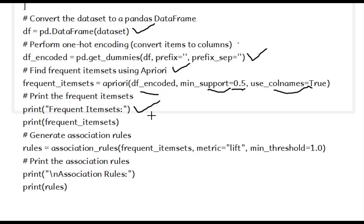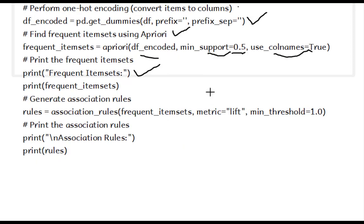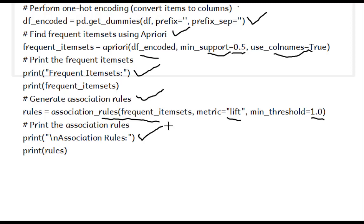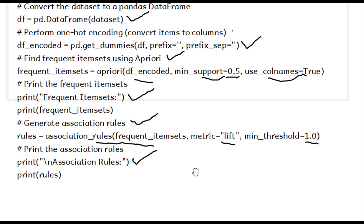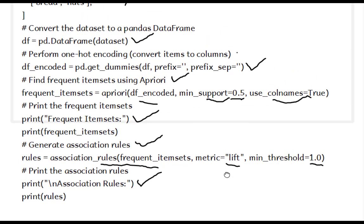Find frequent item sets using Apriori. The Apriori function from the MLExtend library takes the encoded DataFrame, a minimum support threshold (min_support), and specifies use_colnames=True. The min_support parameter is set to 0.5, meaning item sets appearing in at least 50% of transactions will be considered frequent. Then print the frequent item sets along with their support values. The association_rules function generates association rules from the frequent item sets, specifying the metric as lift and setting a minimum threshold. The output includes antecedents, consequents, support, confidence, lift, leverage, conviction, and Zhangs metric for each rule, providing insights into item associations.